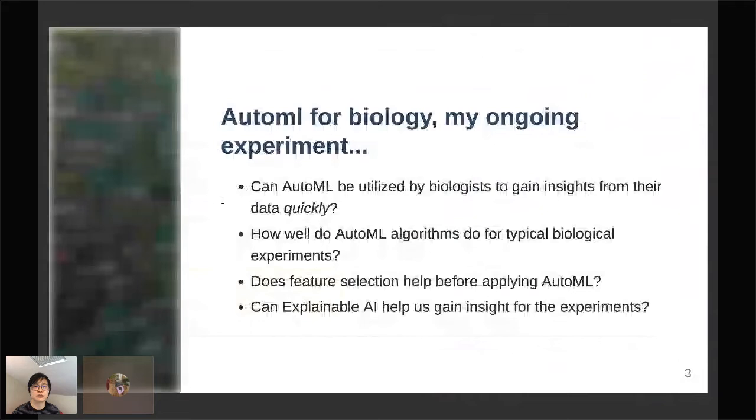I decided to carry out a little experiment to learn more about these AutoML algorithms, to see whether we can use AutoML to quickly gain insights without knowing much about the dataset itself, and whether certain feature selection can be used to help optimize better algorithms using AutoML, and finally whether explainable AI can help us gain insight.